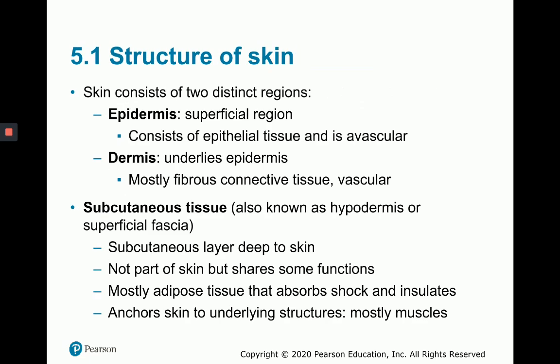The skin itself consists of two distinct regions. You have an upper or superficial epidermis, which is made up of epithelial tissue. Remember from Chapter 4 that epithelial tissue is avascular. Under the epidermis is connective tissue, mainly fibrous connective tissue, which contains blood vessels and is therefore vascular. It gives nutrients to the epidermis via diffusion. Under the epidermis and dermis, deep to the skin, is the subcutaneous tissue, also known as the hypodermis, made up mainly of adipose tissue. It absorbs shock, insulates, and attaches the skin to underlying structures like muscles.